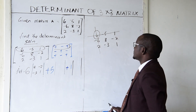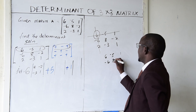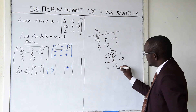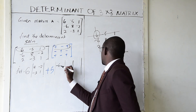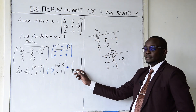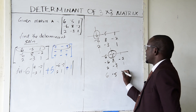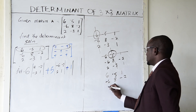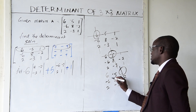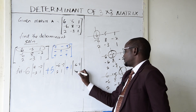For the submatrix of −5, I cancel its column and row from the matrix 6, −5, 1 / −6, 8, −2 / 2, −3, 1 and remain with −6, −2 / 2, 1. For element 1, cancelling its column and row gives −6, 8 / 2, −3.